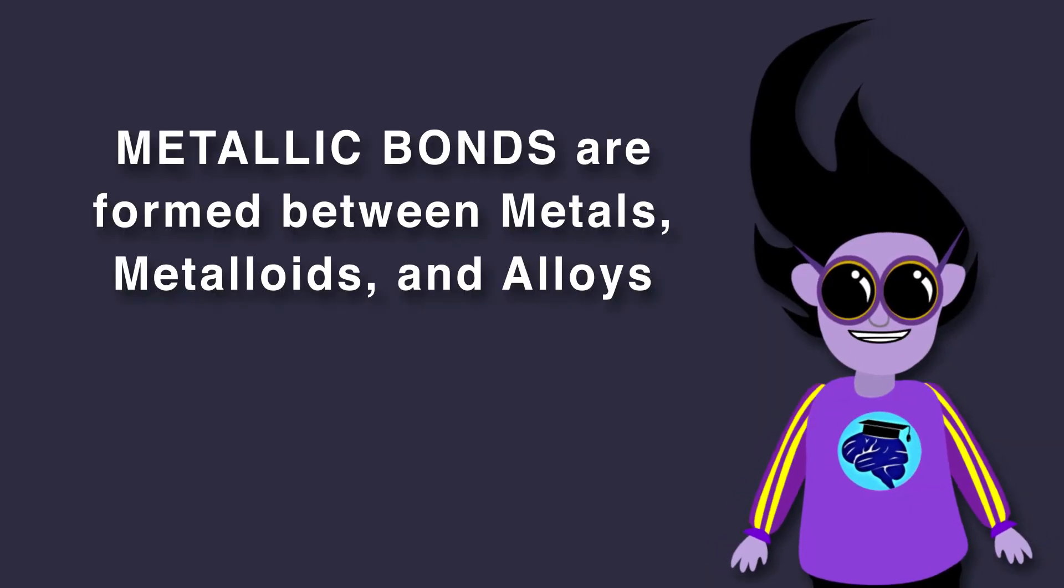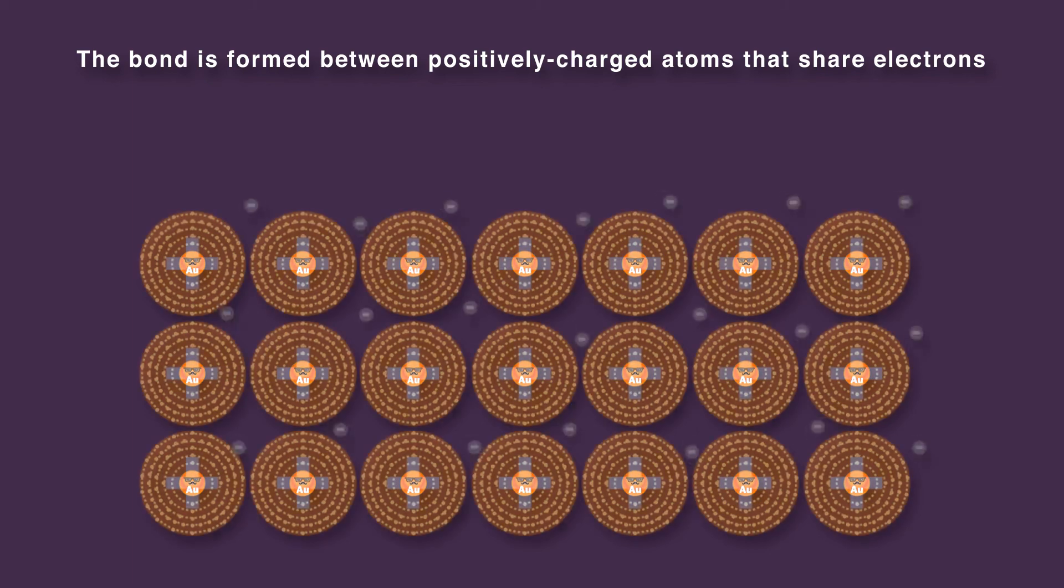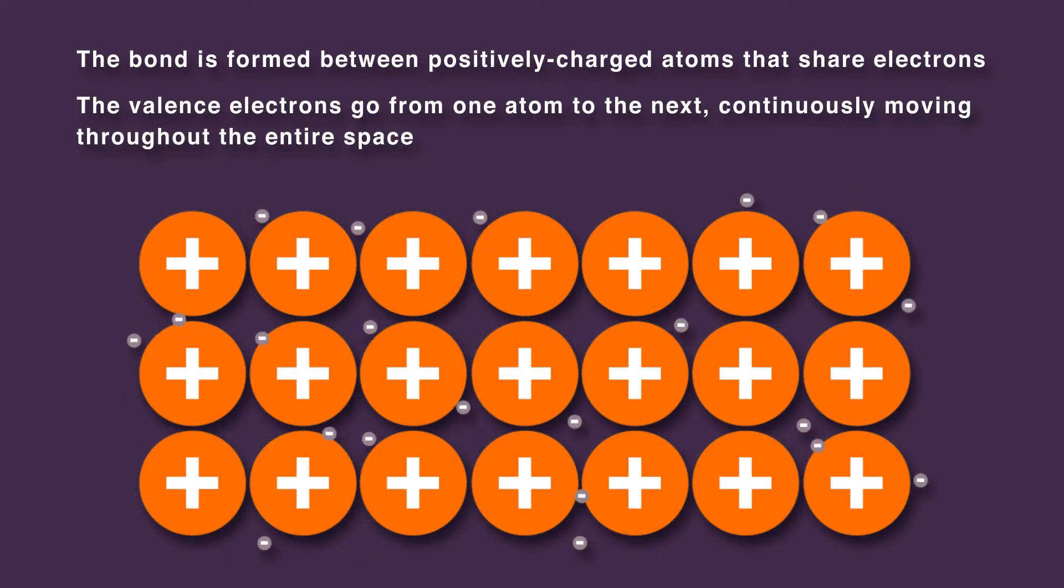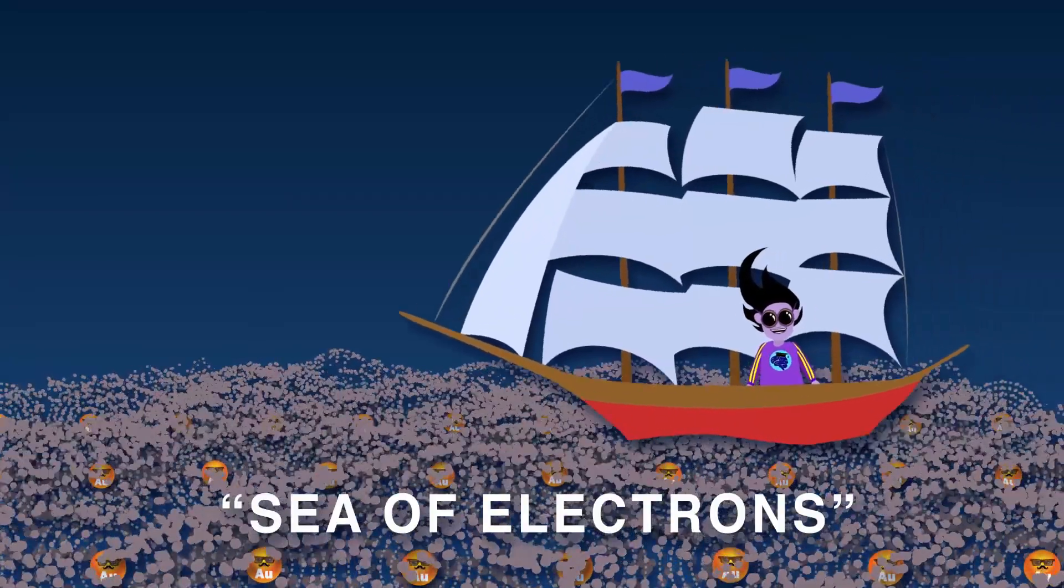Lastly, metallic bonds are formed between metals, metalloids, and alloys. The bond is formed between positively charged atoms that share electrons. The valence electrons go from one atom to the next, continuously moving throughout the entire space. These free electrons have been described as a sea of electrons.